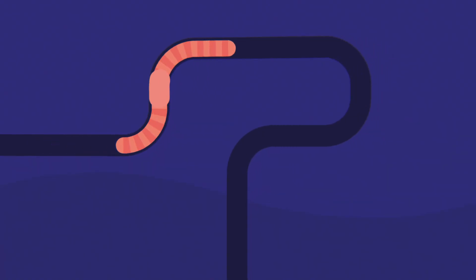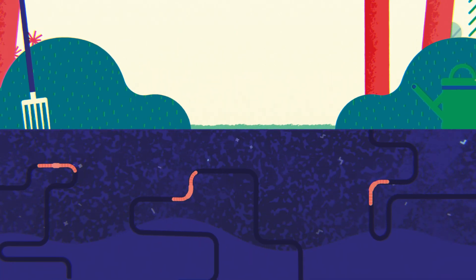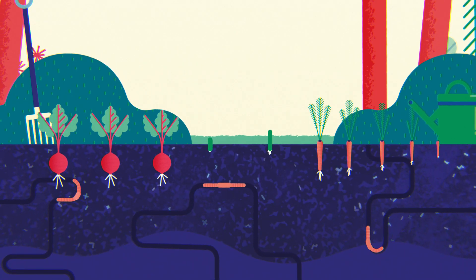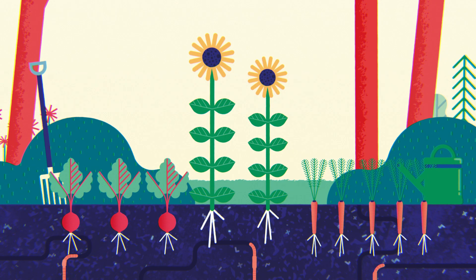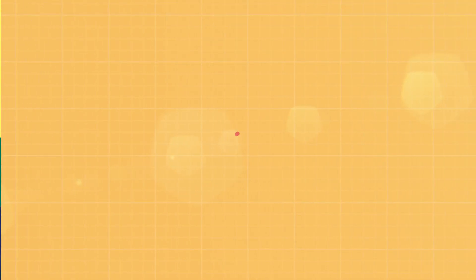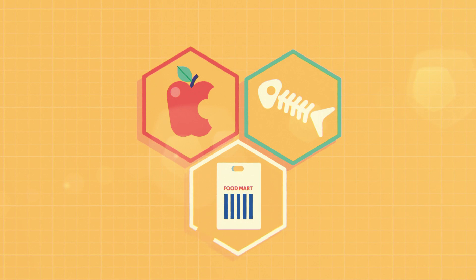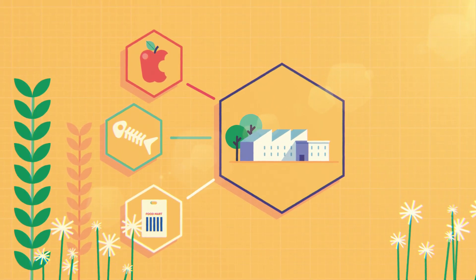Compost is a product which enriches soil as a plant fertilizer, captures carbon, plus helps retain water for plant growth and reduce flooding.